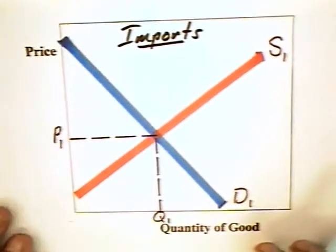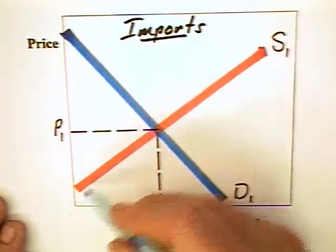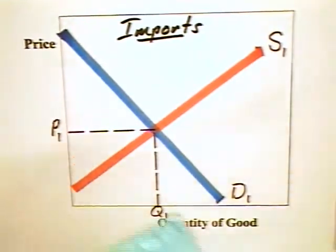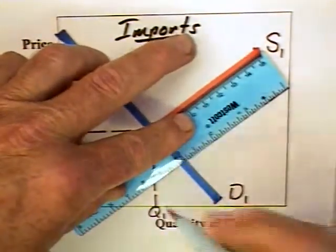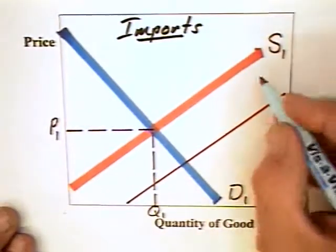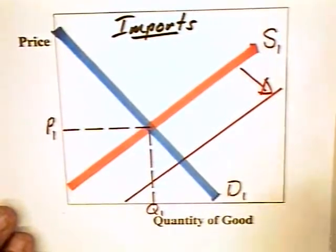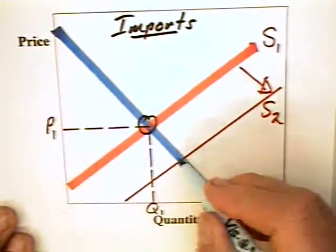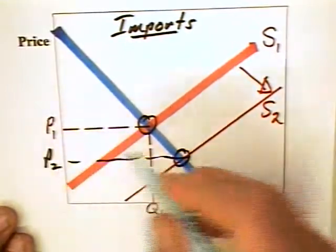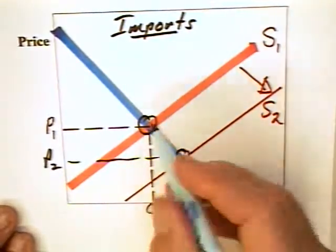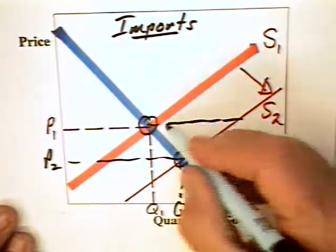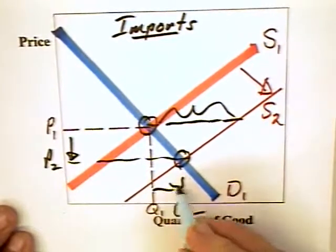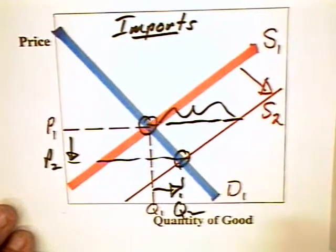Importers on the other hand is a different question. Because if this is the domestic demand and this is the domestic supply of the imported good, then the advent of trade means that the supply curve will in fact go up with the shift in supply due to the greater volume coming in from abroad. The price equilibrium will go from P1, Q1 to P2, Q2.